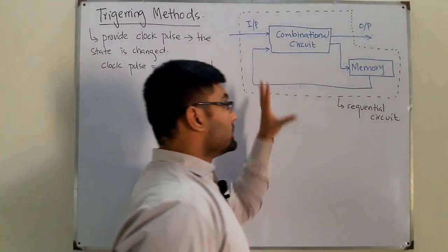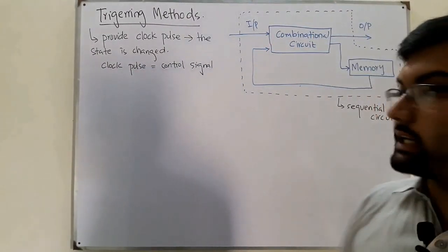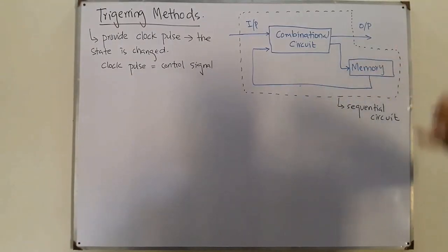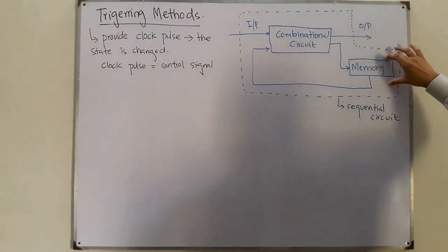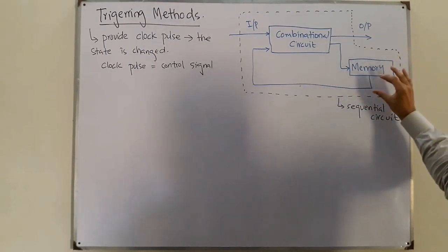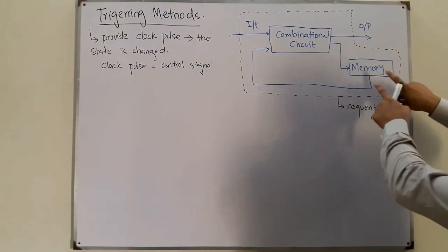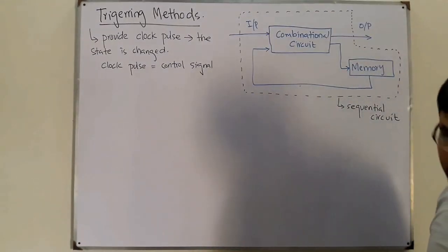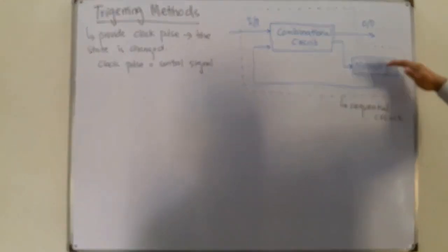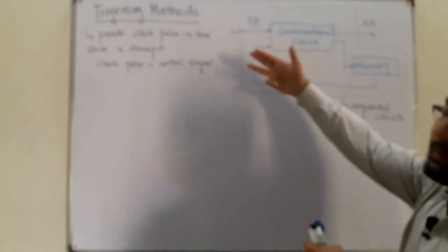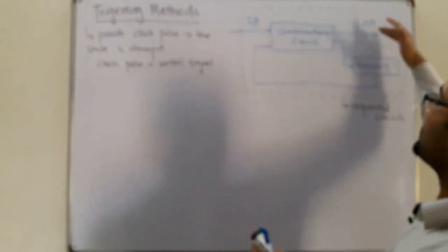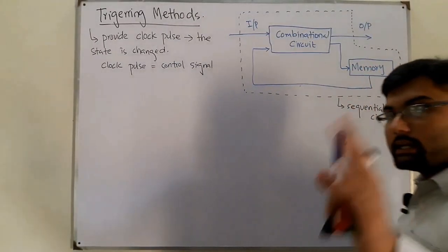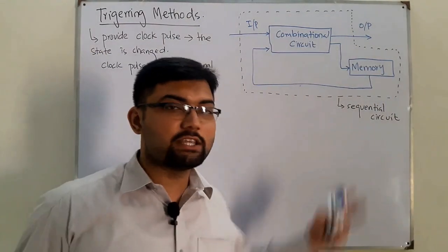We've seen that you give an input, you have a combinational circuit, it gives you an output. That output is stored in a memory, and this output stored in the memory is the state — the present state. This present state along with the next input gives you the next state. The next state is stored in the memory, then along with the third input it gives you the third state, and it goes on and on.